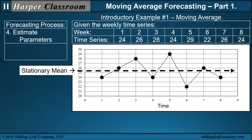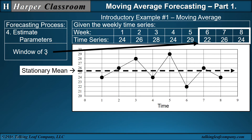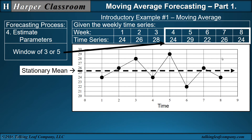Next is estimate your parameters. The parameter for moving average is a window. I will give you the window. For example, if the window is three, that means we take the last three values and use those to determine our forecast for the future. If our window is five, then we take the last five values to forecast the future. We always take the last values — the ones closest to the future.